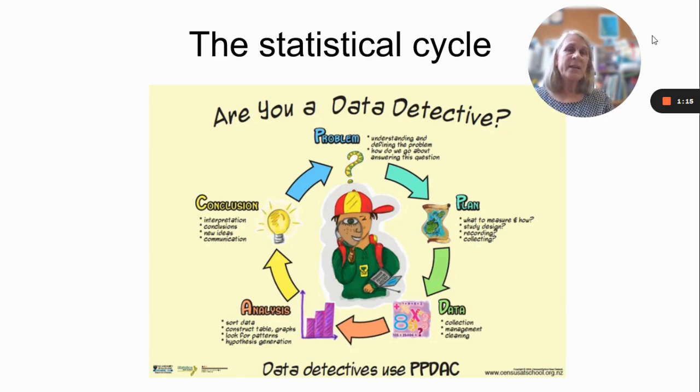So we use the statistical cycle in all of our investigations for NCEA, and this is our maybe second or first visit to it, depending on whether you've done 1.11 bivariate, and we follow that same circle of problem, plan, data, analysis, conclusion.